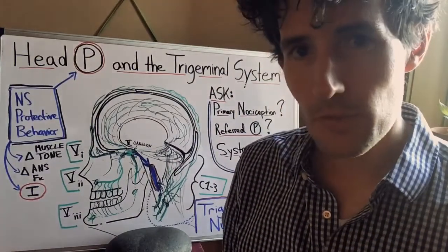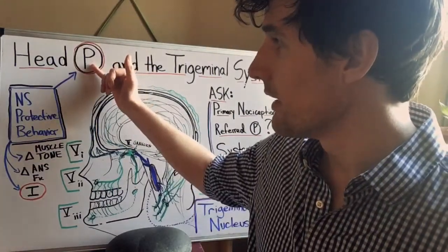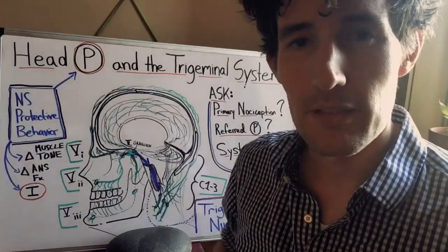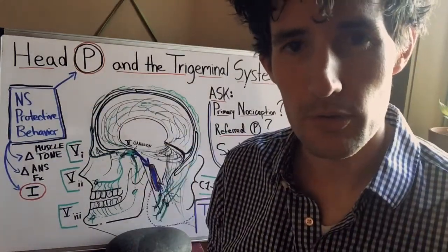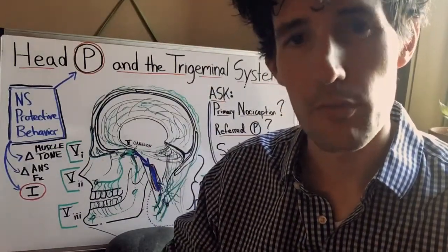For the purposes of this video, let us define pain in this way. Pain is a protective behavior of the nervous system. It is an output of your nervous system that emerges into conscious experience in response to a perception of threat.